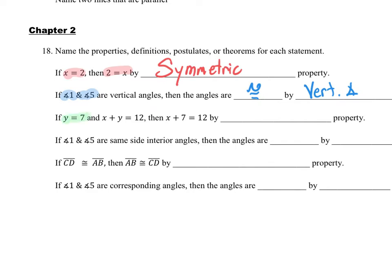If y equals 7 and x plus y equals 12, then x plus 7 equals 12. What's that property? You guys should all know this — it's the substitution property. When you know that y equals 7, you just plug it in.